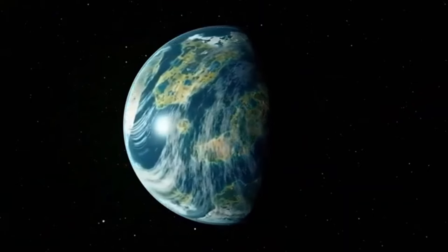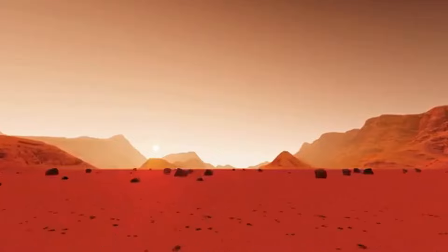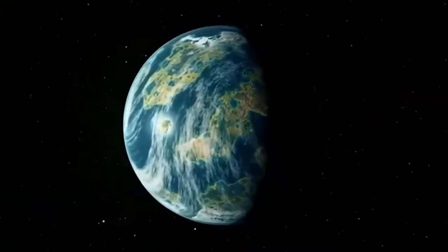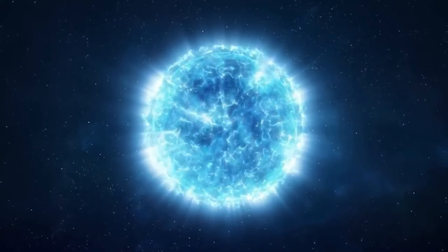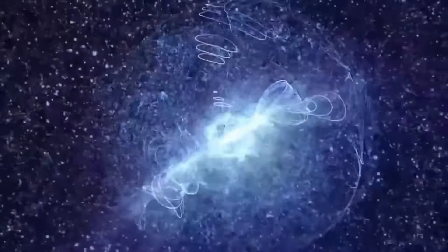The James Webb Telescope has recently achieved an astronomical milestone by capturing the most detailed image of Proxima b, an exoplanet located in our galactic backyard. This breakthrough has illuminated incredible features of this world, suggesting its potential to support life.